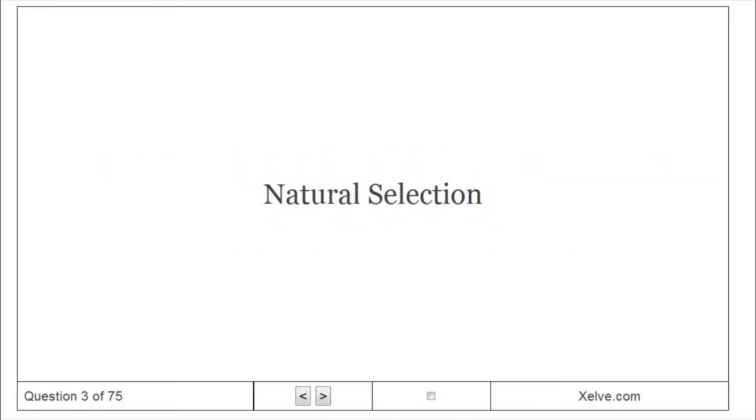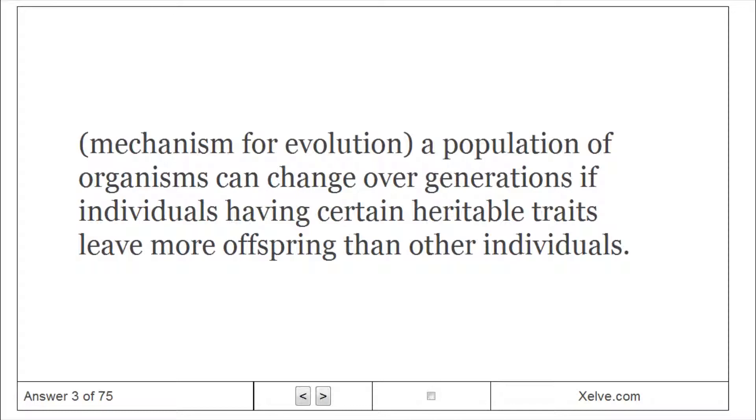Natural Selection: Mechanism for evolution. A population of organisms can change over generations if individuals having certain heritable traits leave more offspring than other individuals.